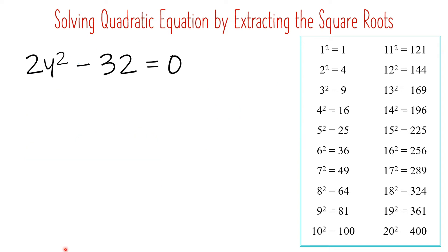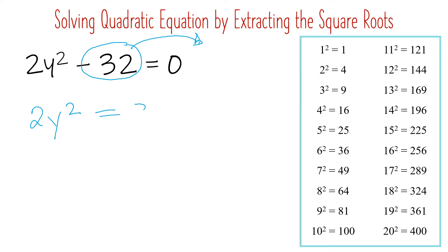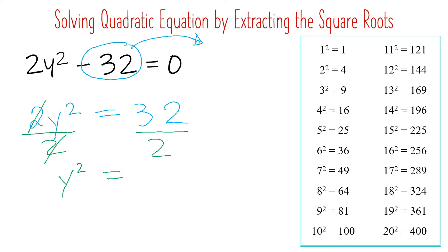Let's try another example: 2y squared minus 32 equals 0. First, transpose 32 to the other side, so we have 2y squared on this side and positive 32 on the other. Since we still have a numerical coefficient on this side, we need to divide both sides by 2 to cancel it. Now we only have y squared equals 32 divided by 2, which gives us 16.